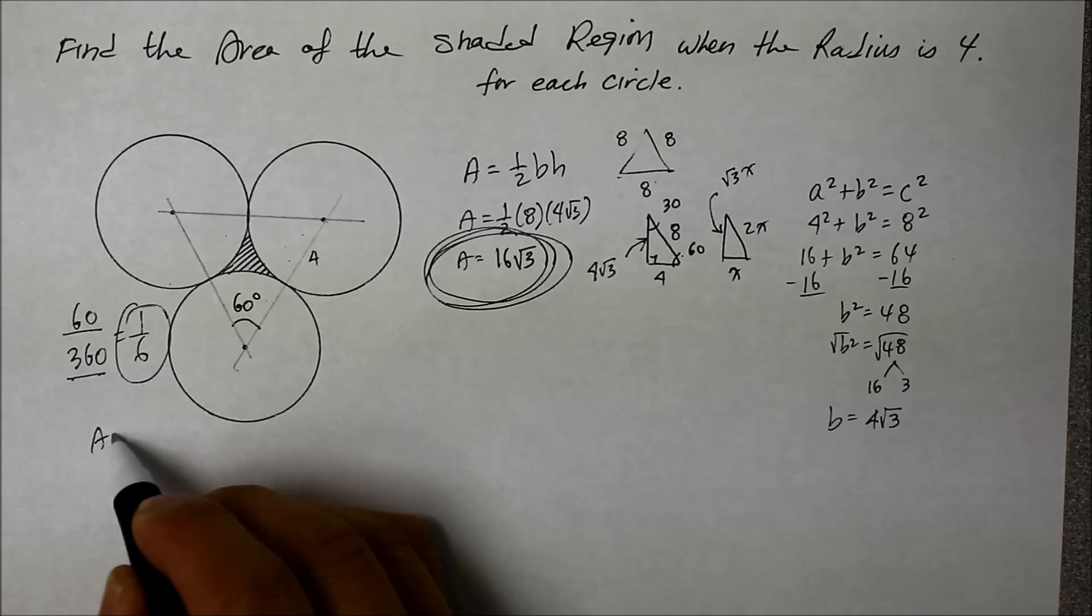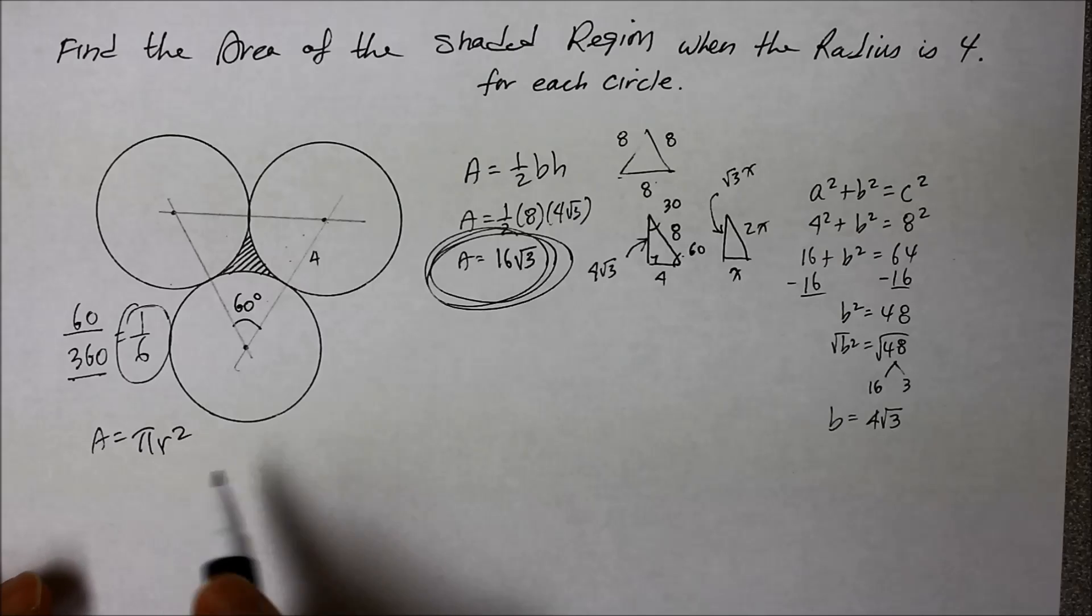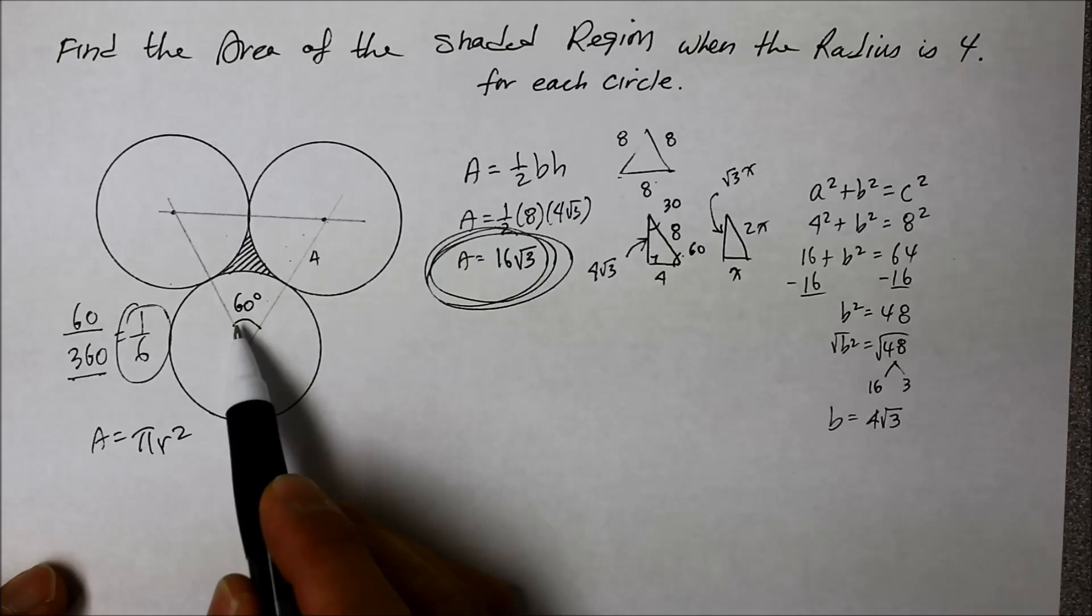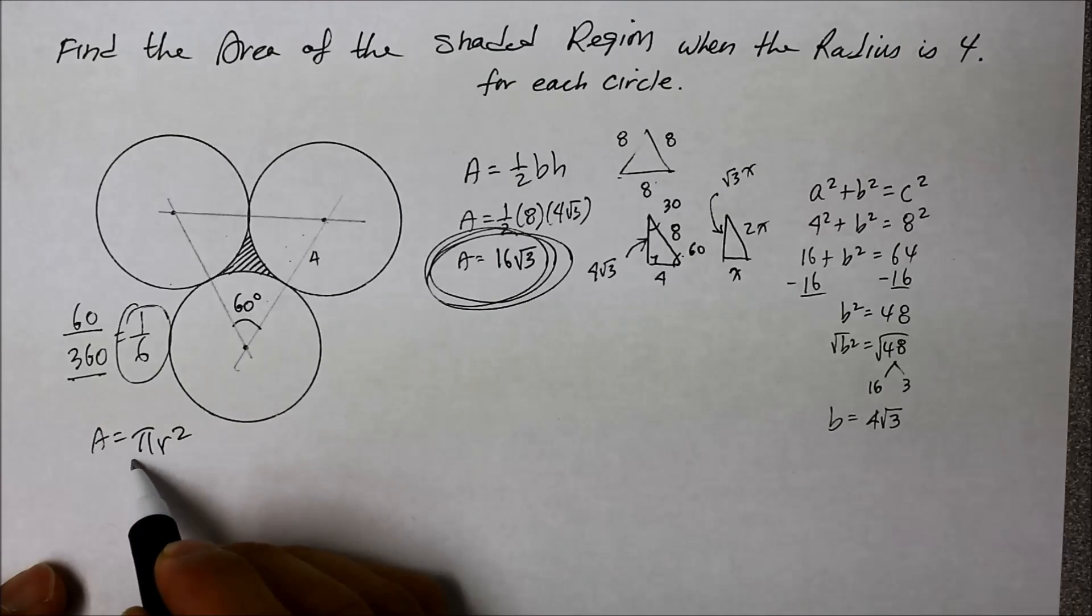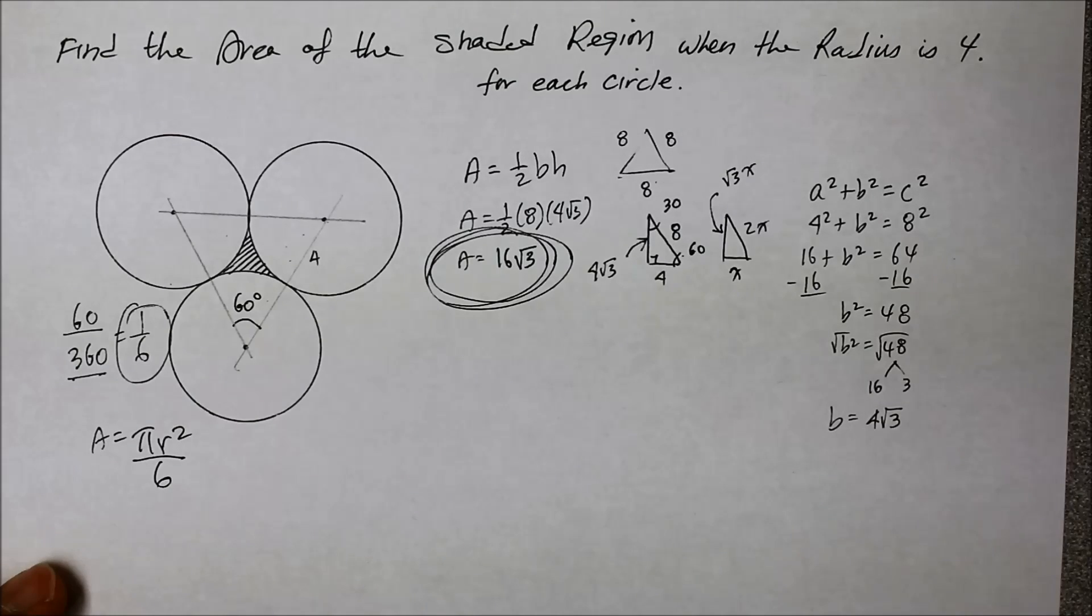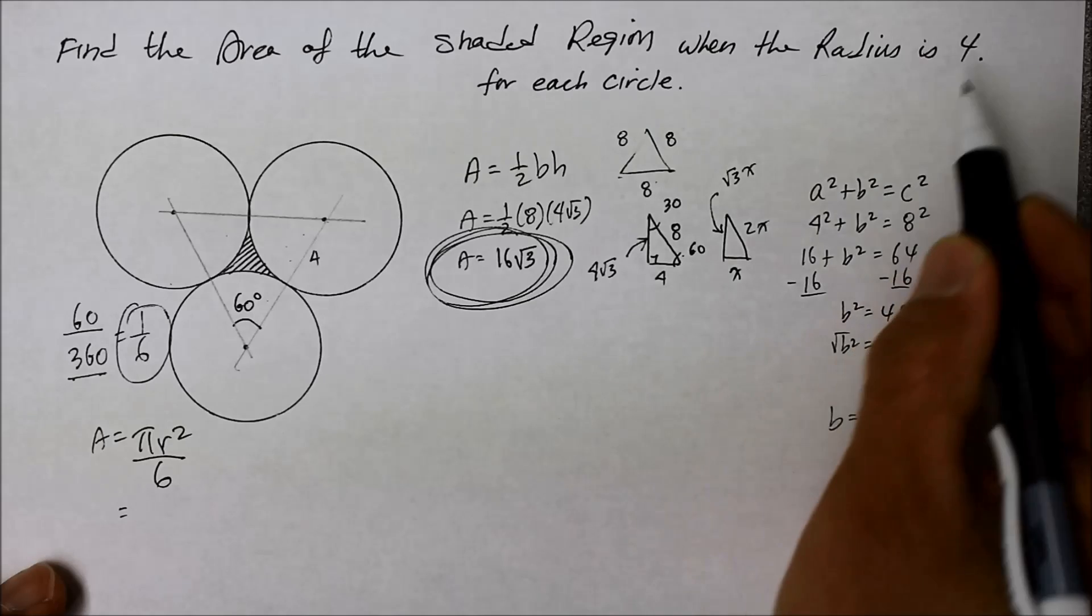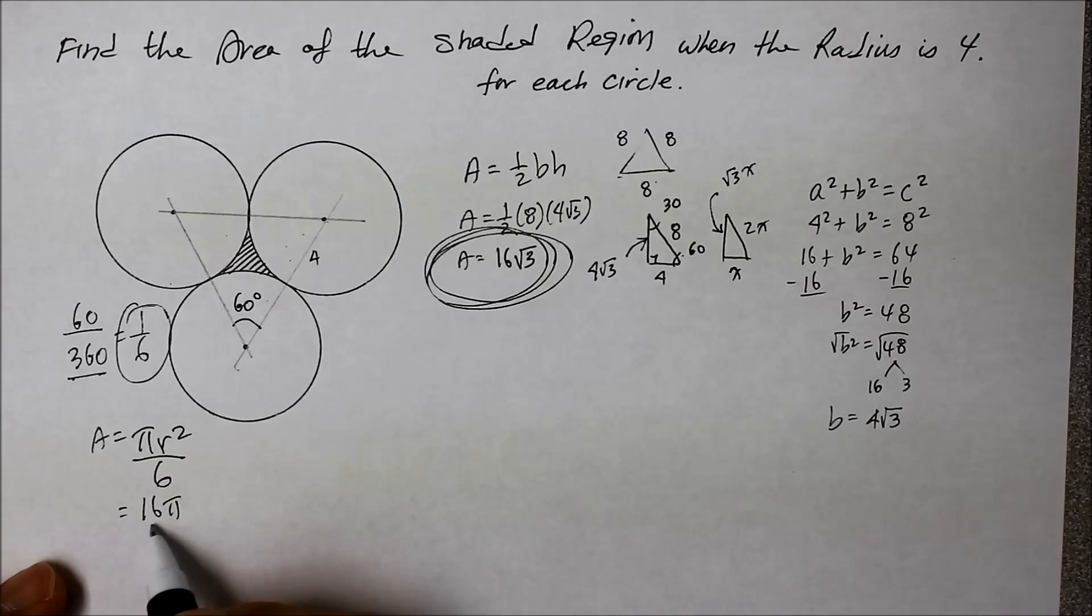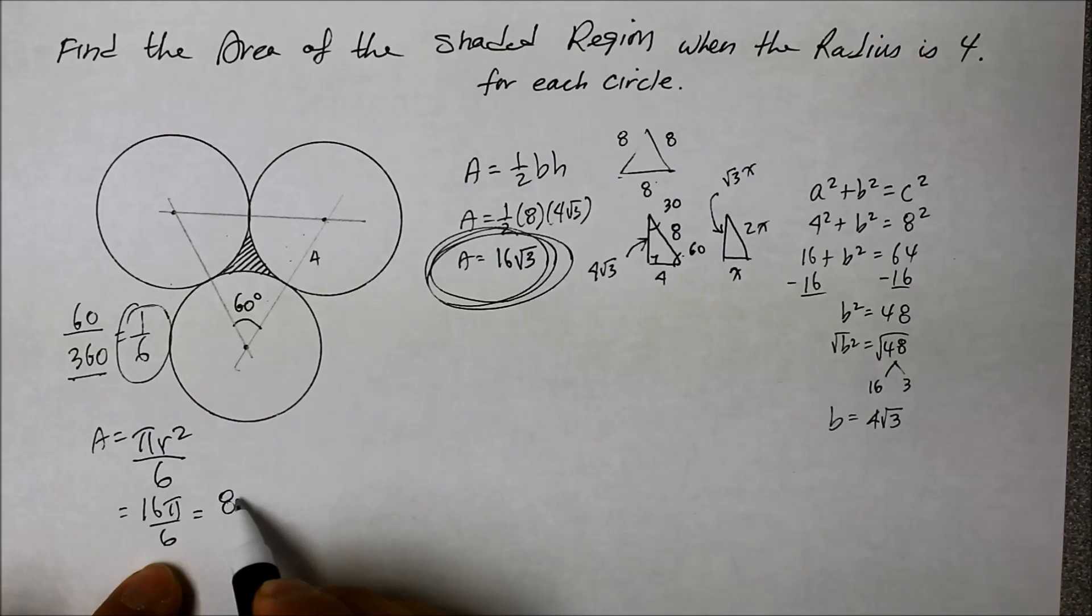Area is equal to pi r squared. And from that area of the circle, we're going to only take one-sixth of it because that's all we need. We need to find the area of that little sector of that whole circle. So divide that by 6. So therefore, the radius was defined as 4. So that's 4 squared, which is 16 pi over 6.